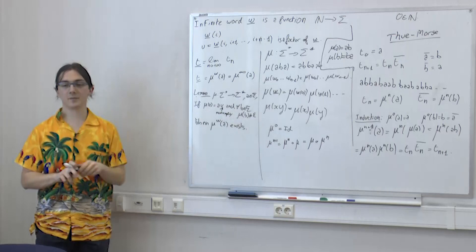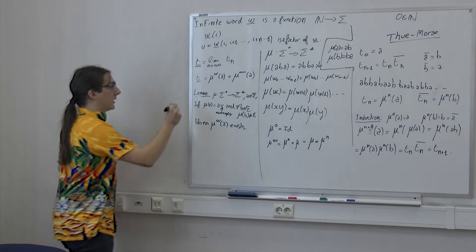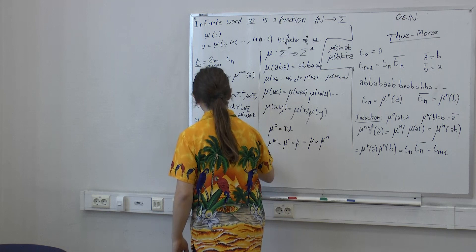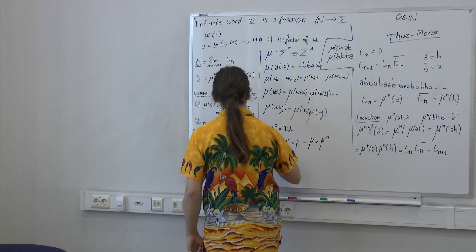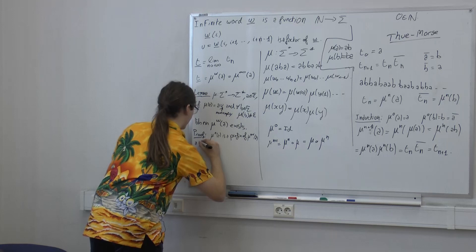The classical recursive algorithm: say you want to move n discs from rod 1 to rod 3. You recursively move n−1 discs from rod 1 to rod 2 (using rod 3 as temporary storage). Then you move the largest disc from rod 1 to rod 3. Then you recursively move n−1 discs from rod 2 to rod 3. The base case: for zero discs, you do nothing.